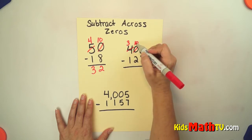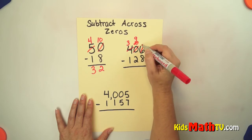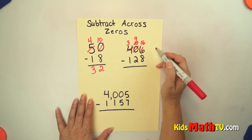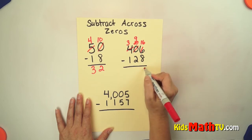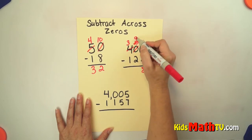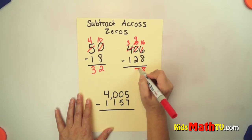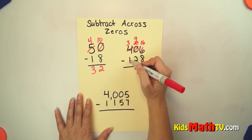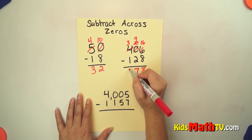Now I have something to borrow from. I'm going to borrow from the 10 and it becomes 9. And this becomes 16. So now I can do 16 minus 8 is 8.